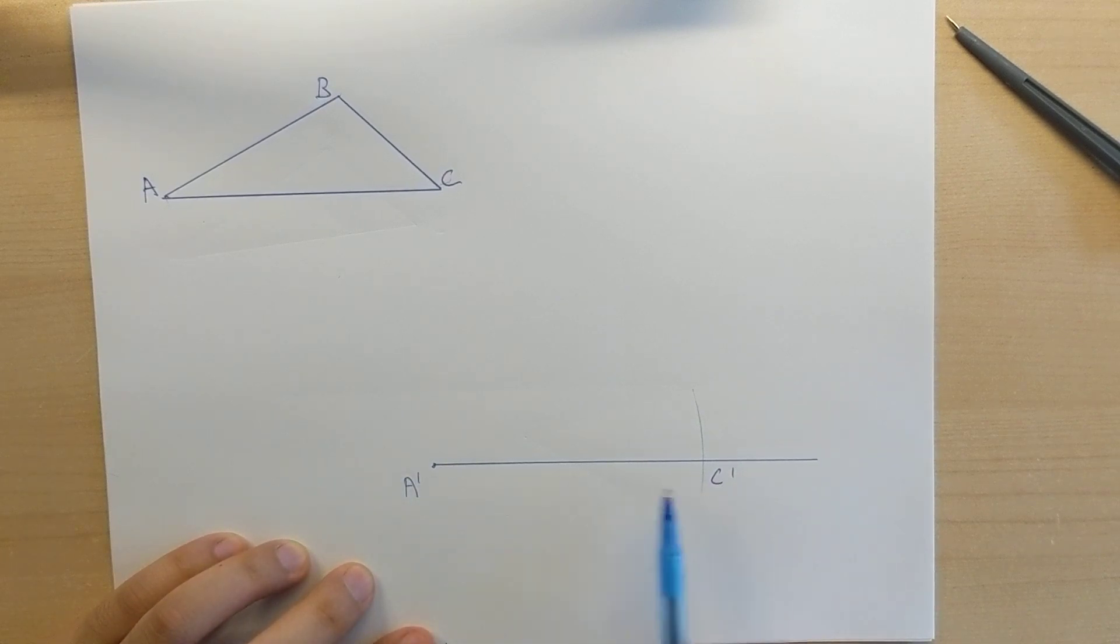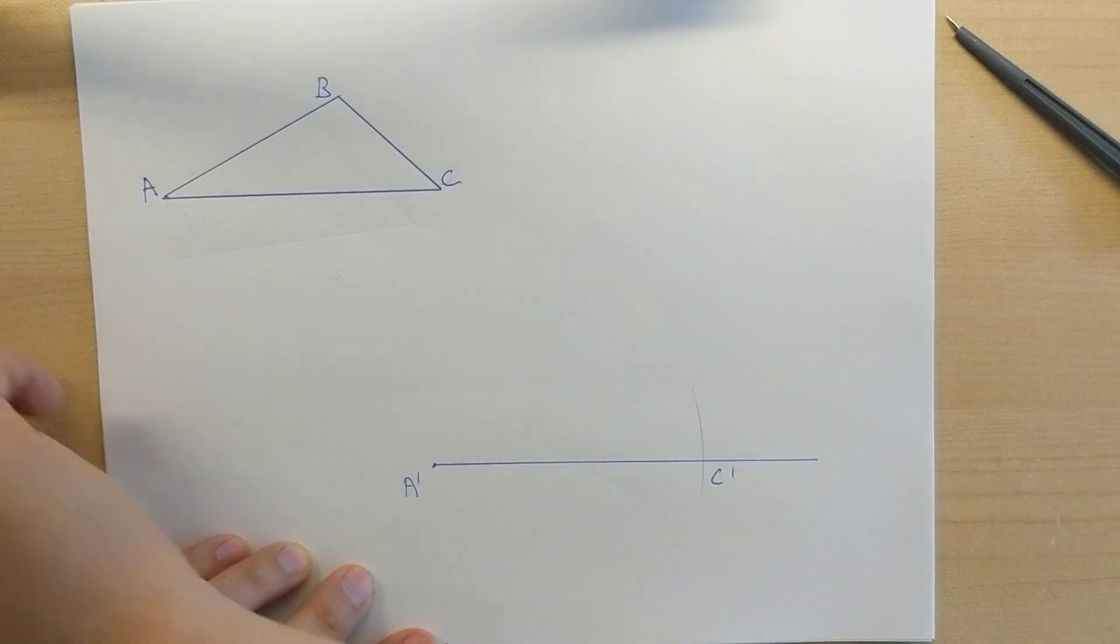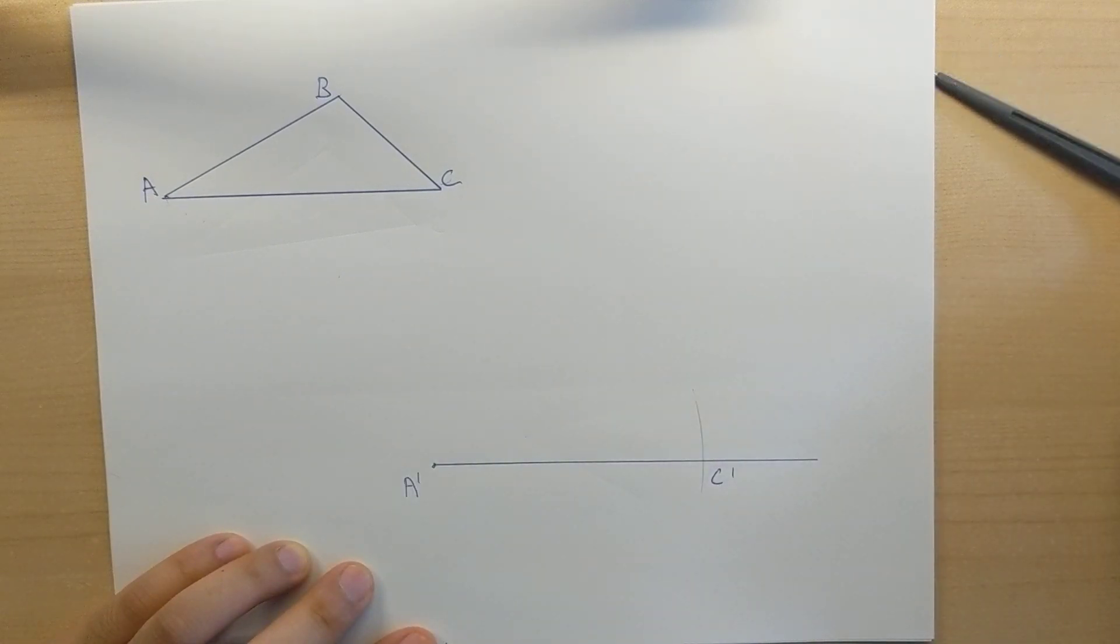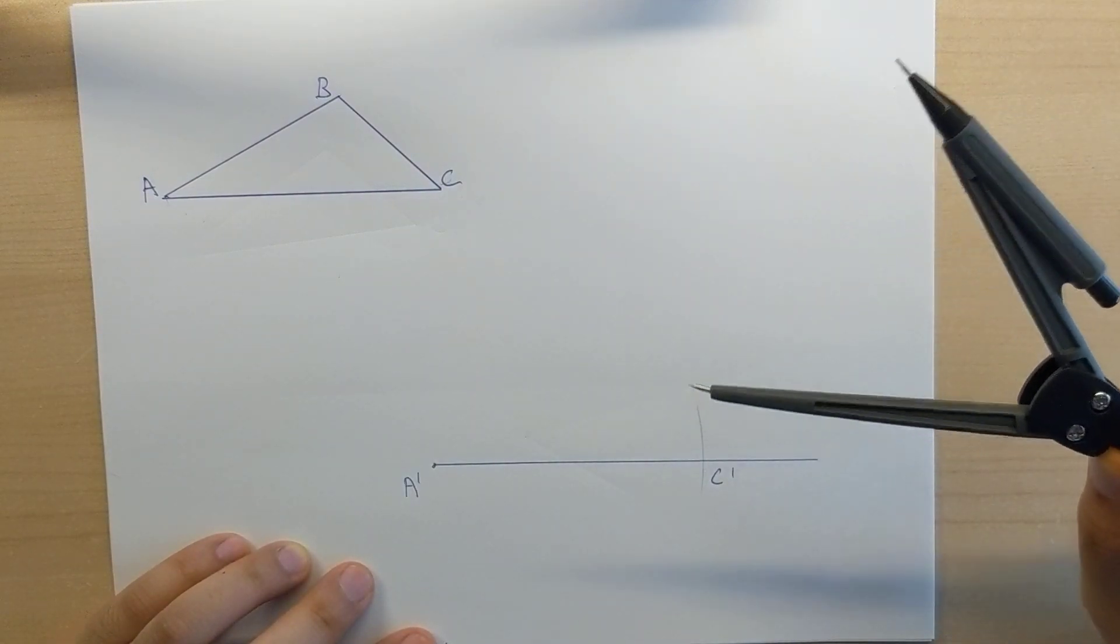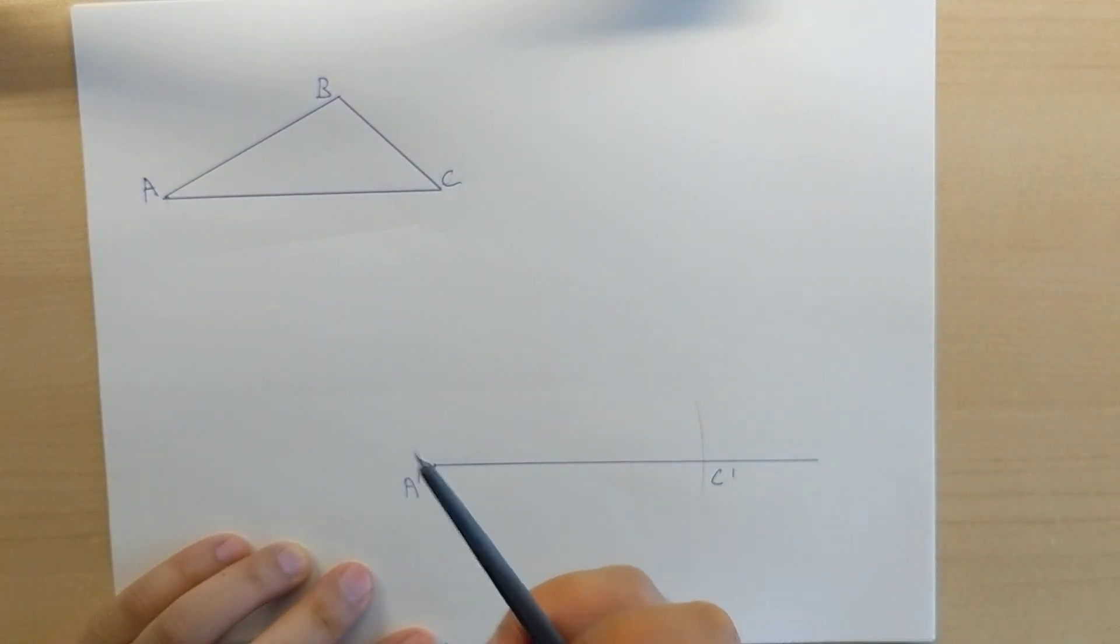So, I've just copied one line segment, A to C, and A prime C prime. What we're going to do now is we're going to copy the length of AB, and then we're going to copy the length of BC.